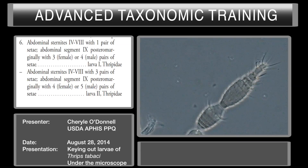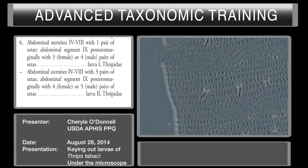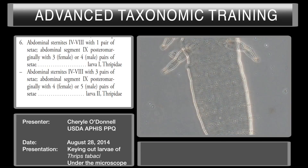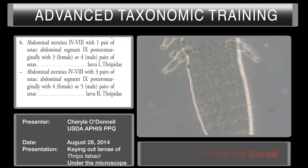The second part of couplet one takes us to couplet number six on the same page. The first part of that couplet asks for abdominal sternites four through eight with one pair of CD. Looking at the dorsal surface of the abdominal sternites, we can count the number of CD: one, two, three pairs. So the first part of couplet six does not match. We go to the second part: abdominal sternites four through eight with three pairs of CD.